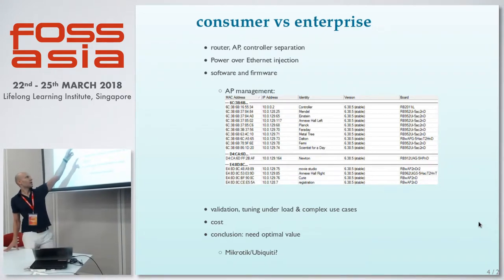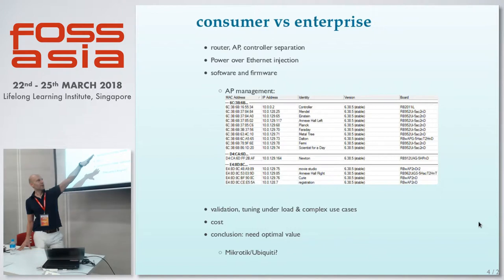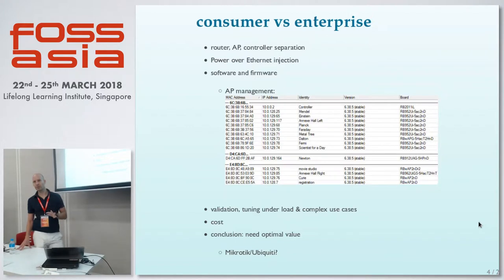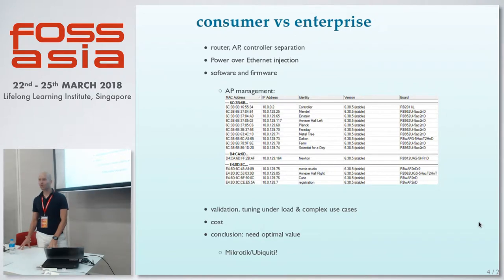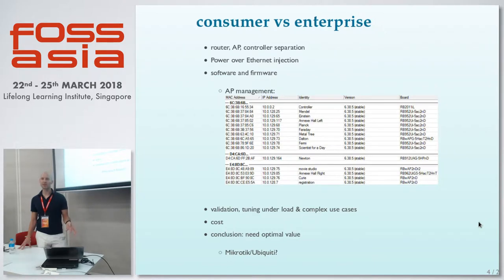Typically when you have many more APs in enterprise kit, you can manage them from a central location — see the configuration, whether they're online, what OS they're running, MAC addresses, IP addresses, and so on. The vendors who produce enterprise kit also do a lot of validation in stable lab and RF environments, which almost certainly home routers don't get.